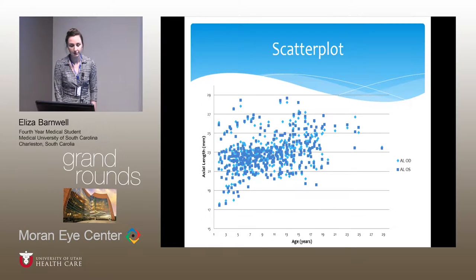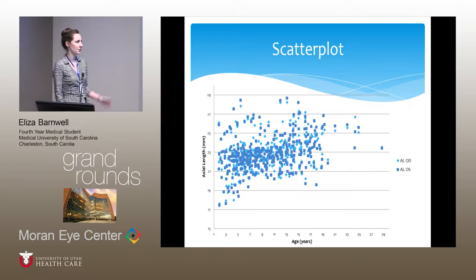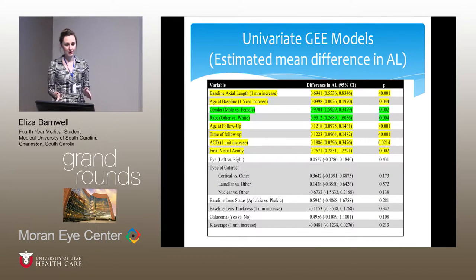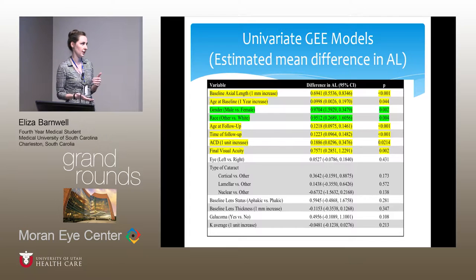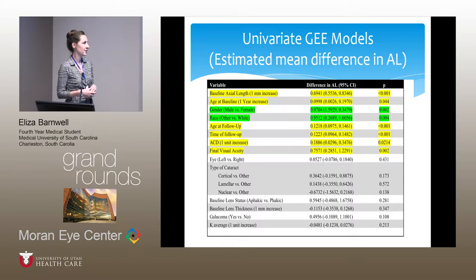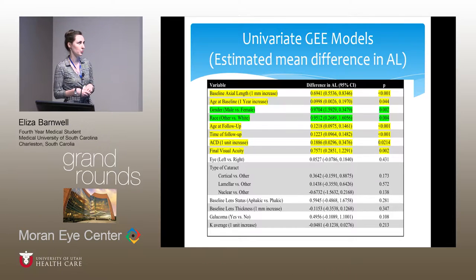A scatterplot of all axial length measurements shows a linear trend over time. From the univariate analysis looking at individual variables and their effect on axial length, the statistically significant findings included that males on average have an axial length 0.97 millimeters longer than females, and Caucasians have a mean axial length 0.95 millimeters shorter than other races — which were highlighted as particularly interesting to interpret.